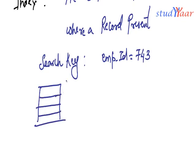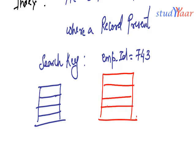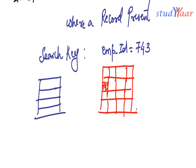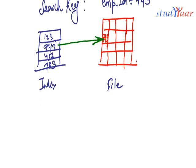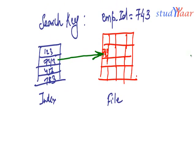Let's suppose this is my index and let's suppose this is my file. I would have information in my file, and I would have one record where employee ID is equal to 743. My index for 743 would point to this location. It's going to directly give me the value where the employee whose record is having an employee ID 743 is stored.